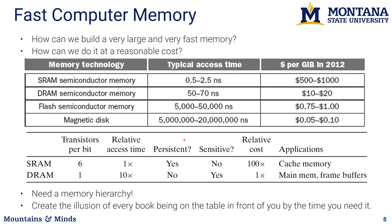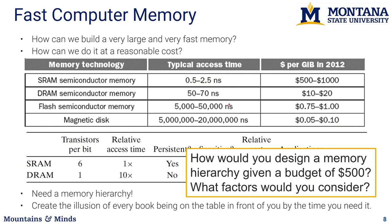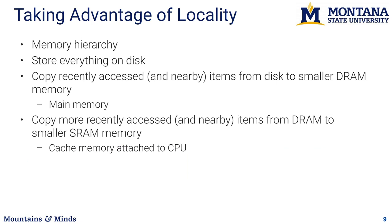What we want to do is provide the illusion of everything being SRAM — your program thinks that — while most of the data actually resides on disk. We implement this with a memory hierarchy: all data is stored on disk, a subset is copied into main memory, and data actually needed by the processor in a given call stack is loaded into SRAM cache using spatial and temporal locality. SRAM is attached to the CPU for very fast access, and data is then copied into registers to actually do computations.